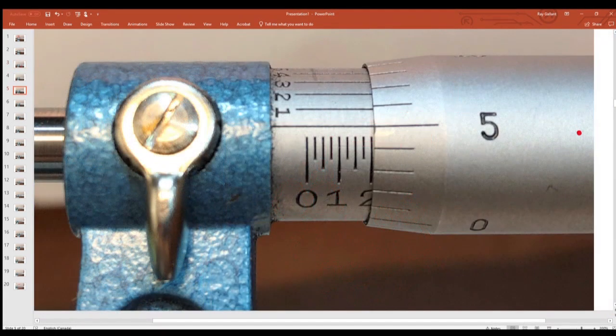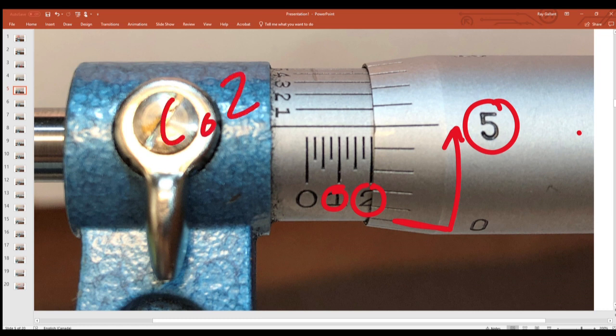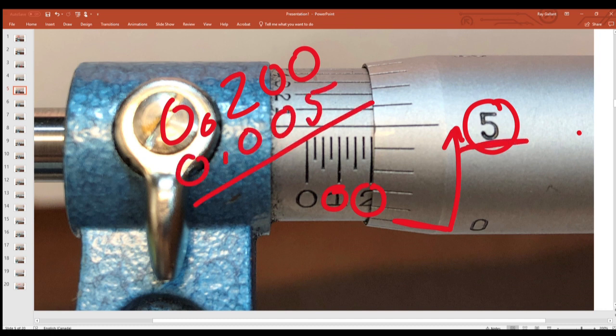Let's take a look at what we have here. We have our 100 thou, we have our 200 thou. Our zero's here for our spindle, we go up and we're at 5. So let's go to 200, 0.200. We have to add the 5, 0.005. Therefore, we're at 0.205.